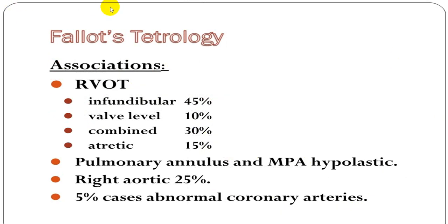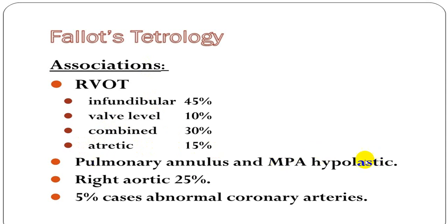The right ventricular outflow obstruction associated with tetralogy may be infundibular — which is the most common — valvular in about ten percent of cases, or combined in about thirty percent of cases. Very rarely there is complete pulmonary atresia. This condition is frequently associated with hypoplastic mitral valve, right-sided aortic arch in twenty-five percent, and abnormal coronary artery anatomy.